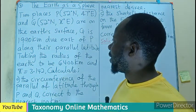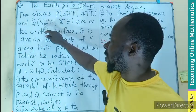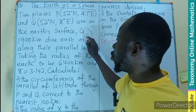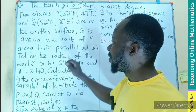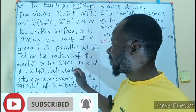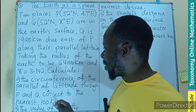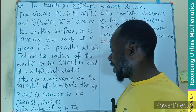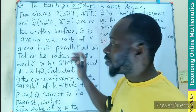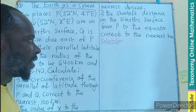Two places, P, which is on latitude 52 degrees north, longitude 47 degrees east, and point Q, also on the same latitude and on longitude of X degrees east. On the Earth's surface, where Q is 1,990 kilometers due east of P along the parallel latitude. Taking the radius of the Earth to be 6,400 kilometers and pi to be 3.142, we have to calculate: 1, the circumference of the parallel of latitude through P and Q, correct to the nearest hundred kilometers. Then 2, we have to find the value of X to the nearest degree and find the shortest distance on the Earth's surface from P to the equator, correct to the nearest kilometers.